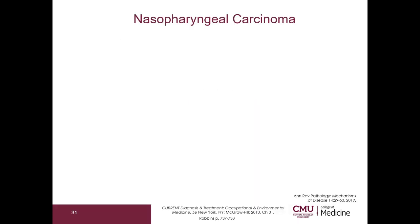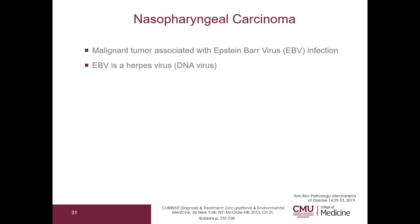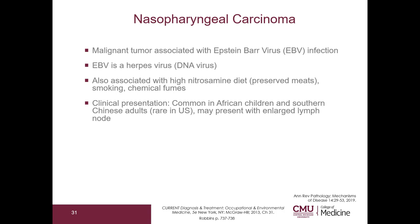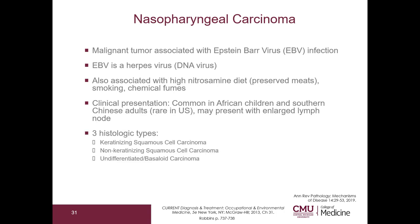Let's go on to nasal lesions. Nasopharyngeal carcinoma is a malignant tumor associated with Epstein-Barr virus infection. EBV is a herpes virus — a DNA virus. It is also associated with a high nitrosamine diet meaning preserved meats, and with smoking and chemical fumes. It is common in African children and southern Chinese adults, and rare in the United States. It may present with an enlarged lymph node. There are three histologic types: keratinizing squamous cell carcinoma, non-keratinizing squamous cell carcinoma, and undifferentiated basaloid carcinoma. Overall five-year survival is 60%.